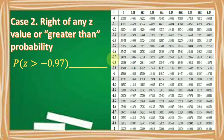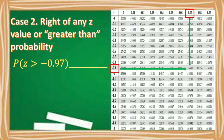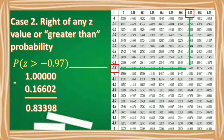Another example: find the probability of Z greater than negative 0.97. Look for negative 0.9 in the first column and 0.07 in the first row; their intersection is 0.16602. Subtract this area from 1: 1 minus 0.16602 equals 0.83398. Therefore, the area of the Z-score greater than negative 0.97 is 0.83398.